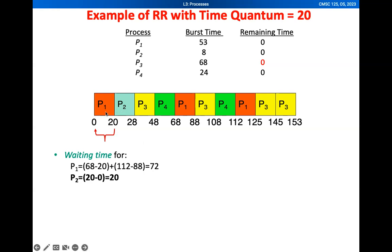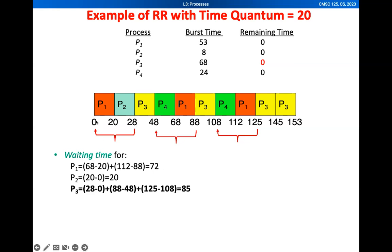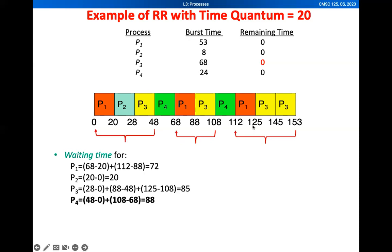You can see that after P1 executes, P2 already gets its turn. Since P2 has a burst time of only 8, it completes its execution right away. For P3, the waiting time is 28 minus zero, because before P3 executes, P1 and P2 have to execute first. Then after P3 executes for some time, P4 and P1 execute again. So we sum up: 28 minus 0, plus 88 minus 48, plus 125 minus 108, covering only those periods that P3 did not execute.